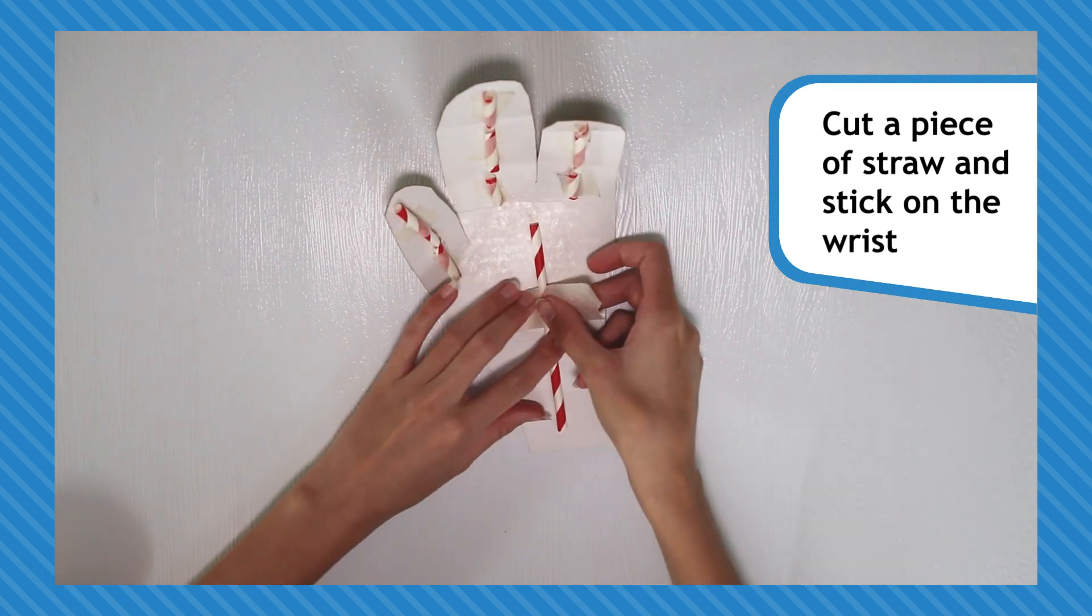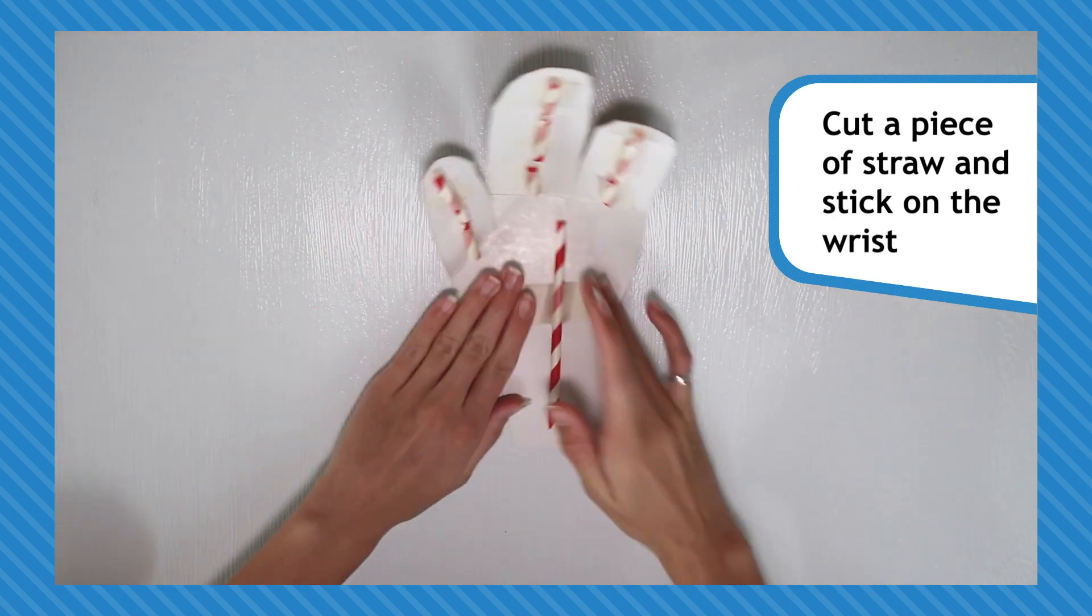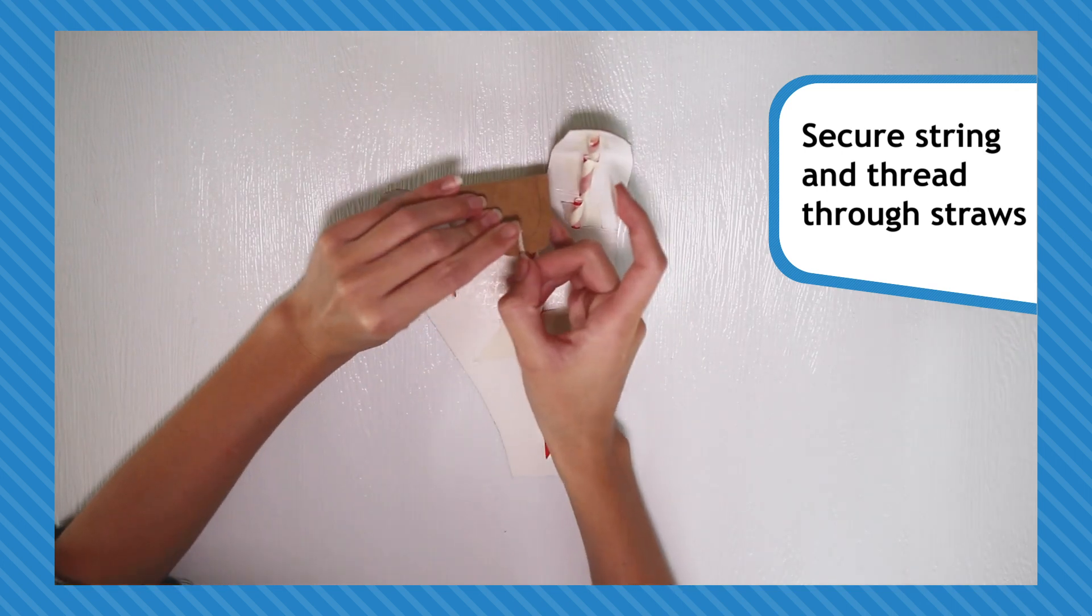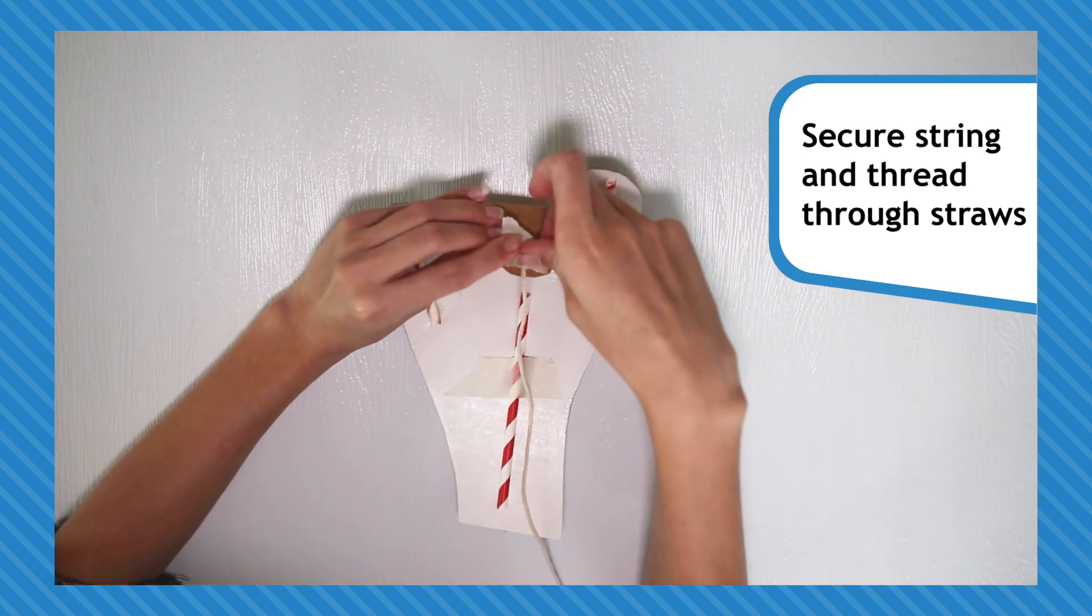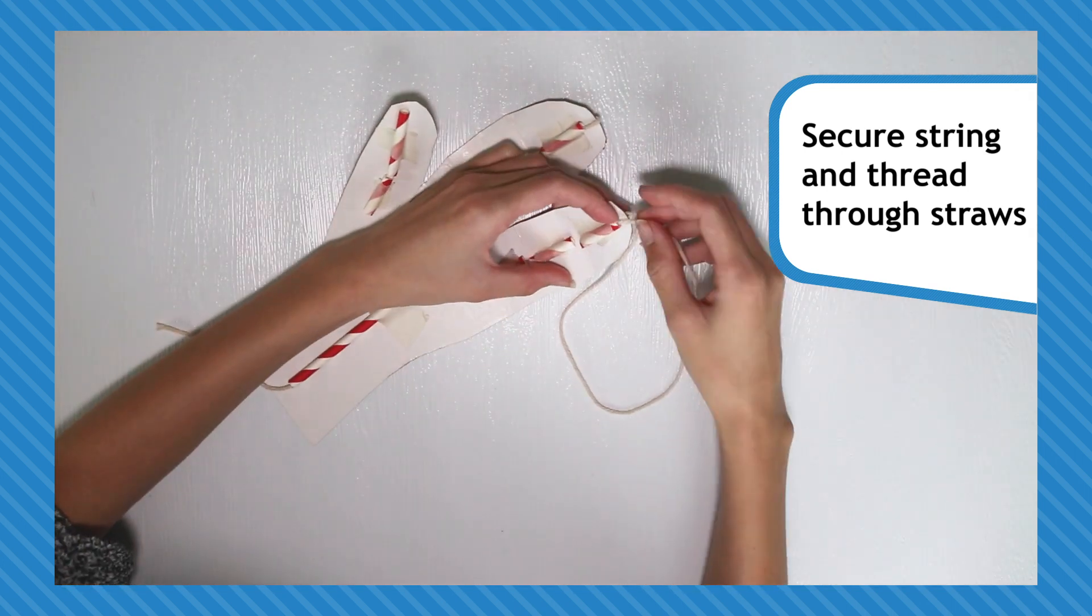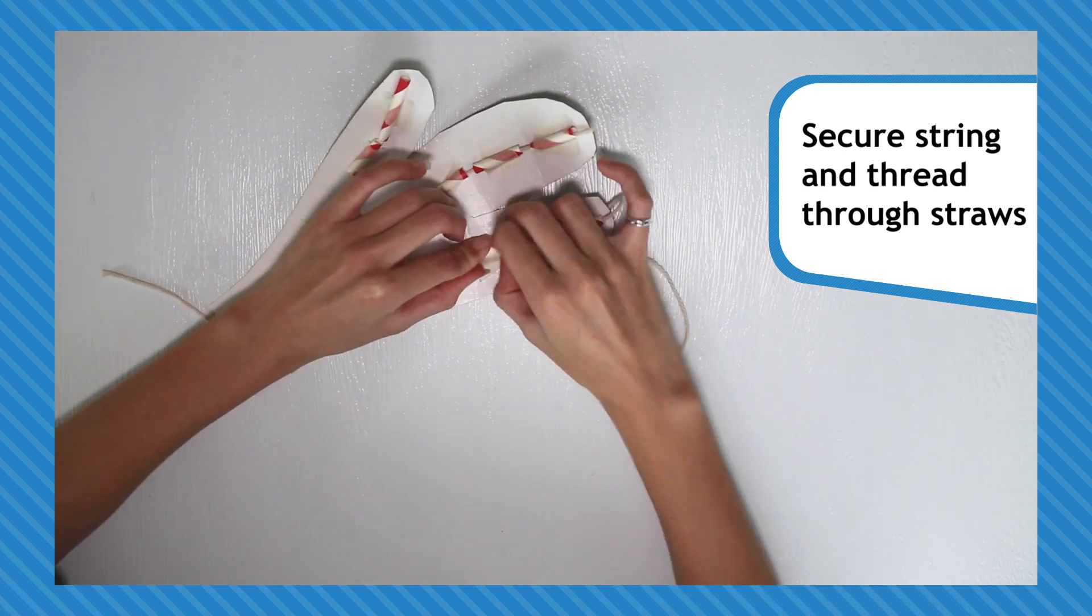Cut a longer length of straw and stick it into the wrist section. Next, take a length of string and secure it at the tip of each finger. Thread it towards the line of straws and then through the wrist.